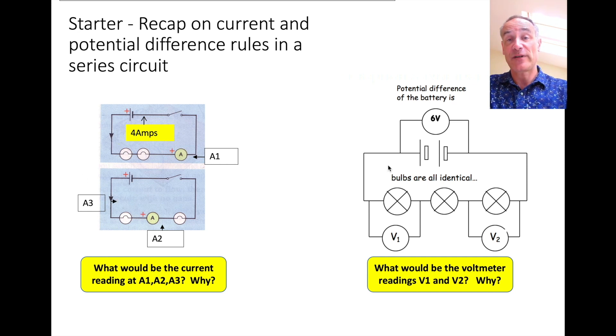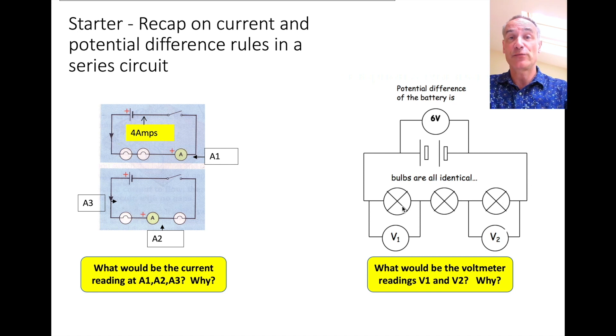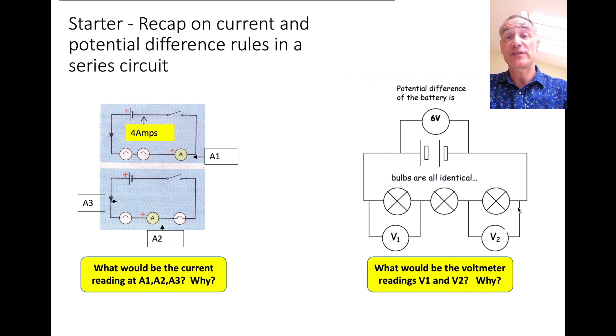The second question: you've got a series circuit with three identical bulbs and the voltage to the power supply is 6 volts. What would a voltmeter read if you put it across this bulb here and this bulb here? Pause the video and I'll go through it in a minute.